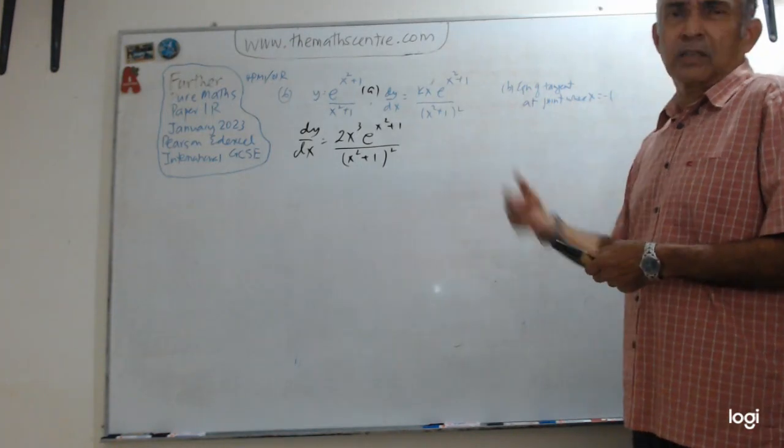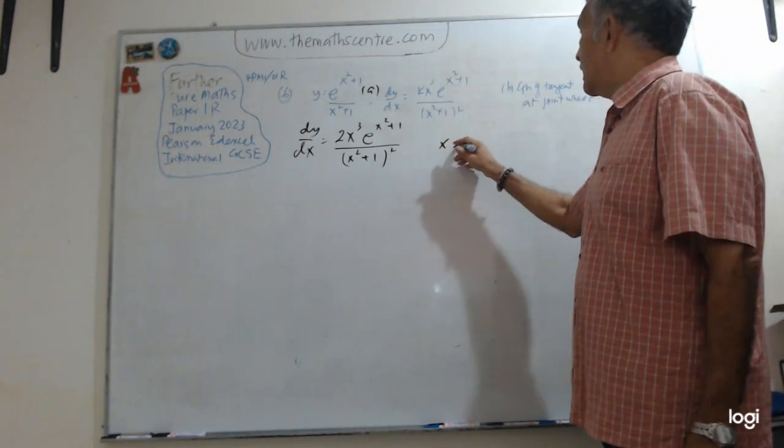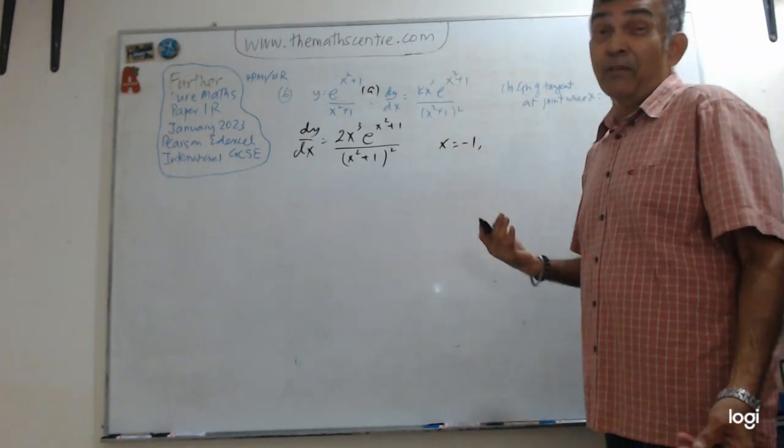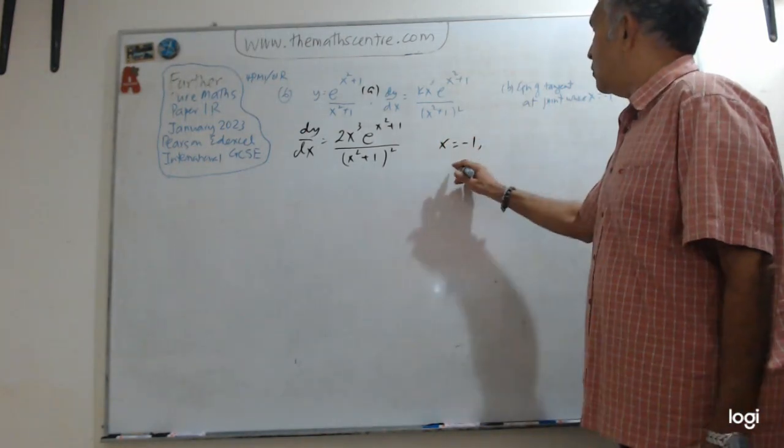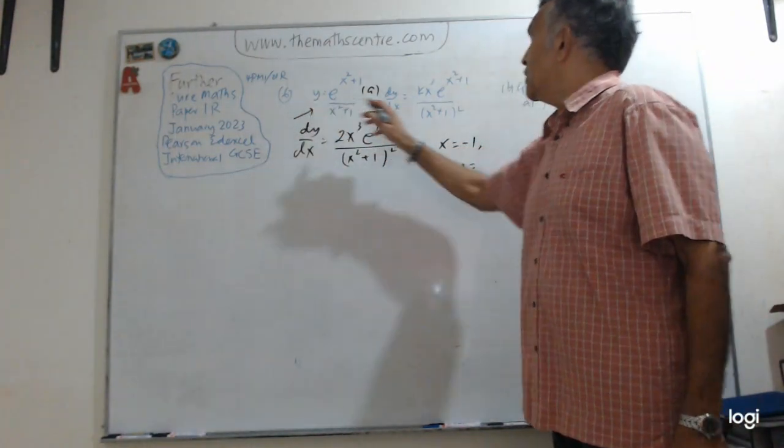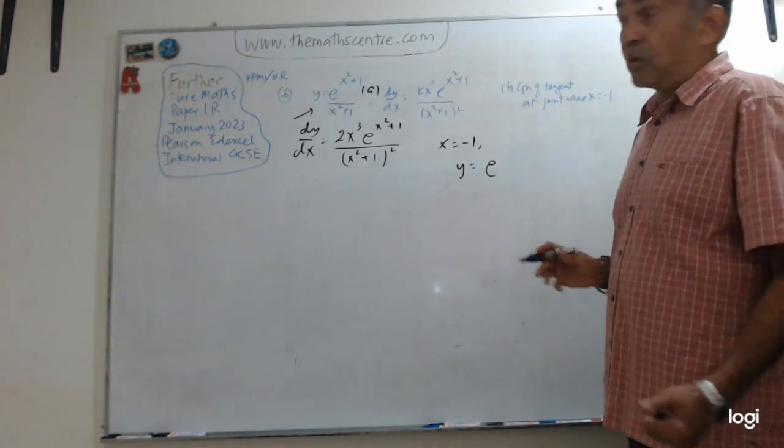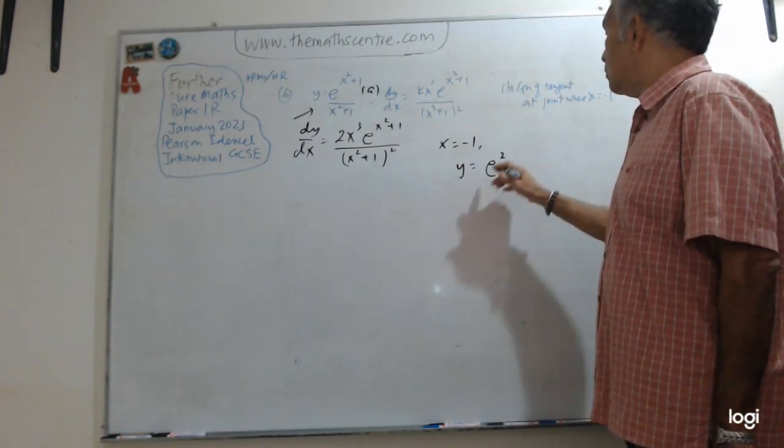Not hard. You only have dy/dx. So first off, x equals negative 1. I need the y value too. So what is y? That is from here. So I need e to the power of minus 1 squared is 1. 1 plus 1 is 2.